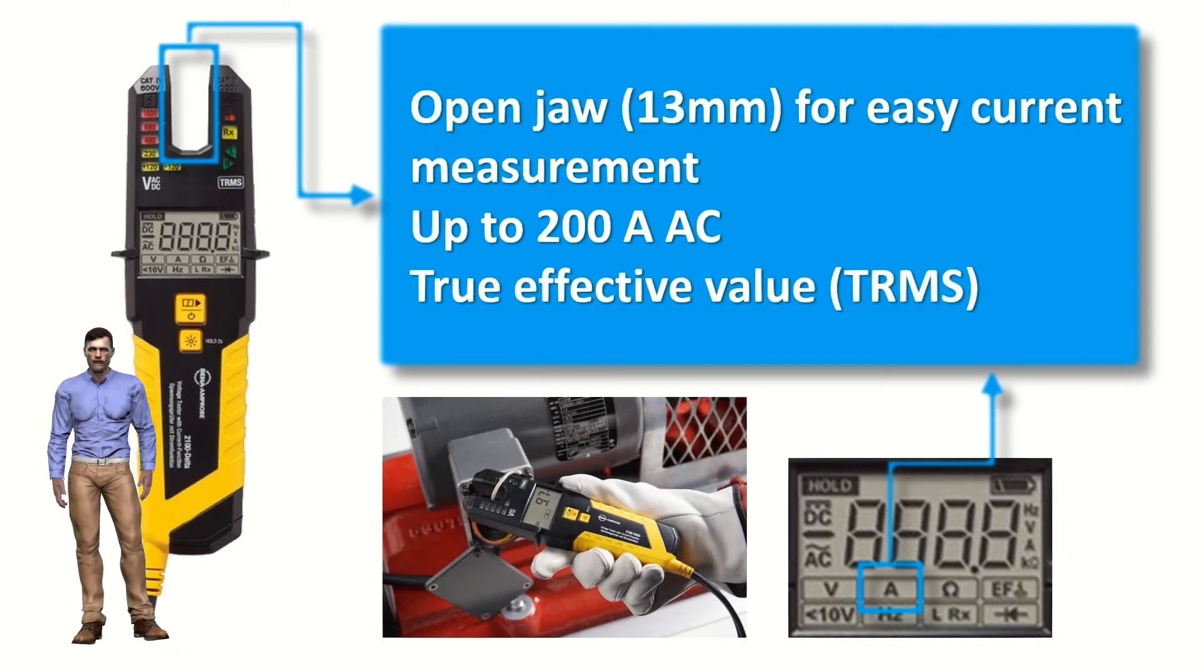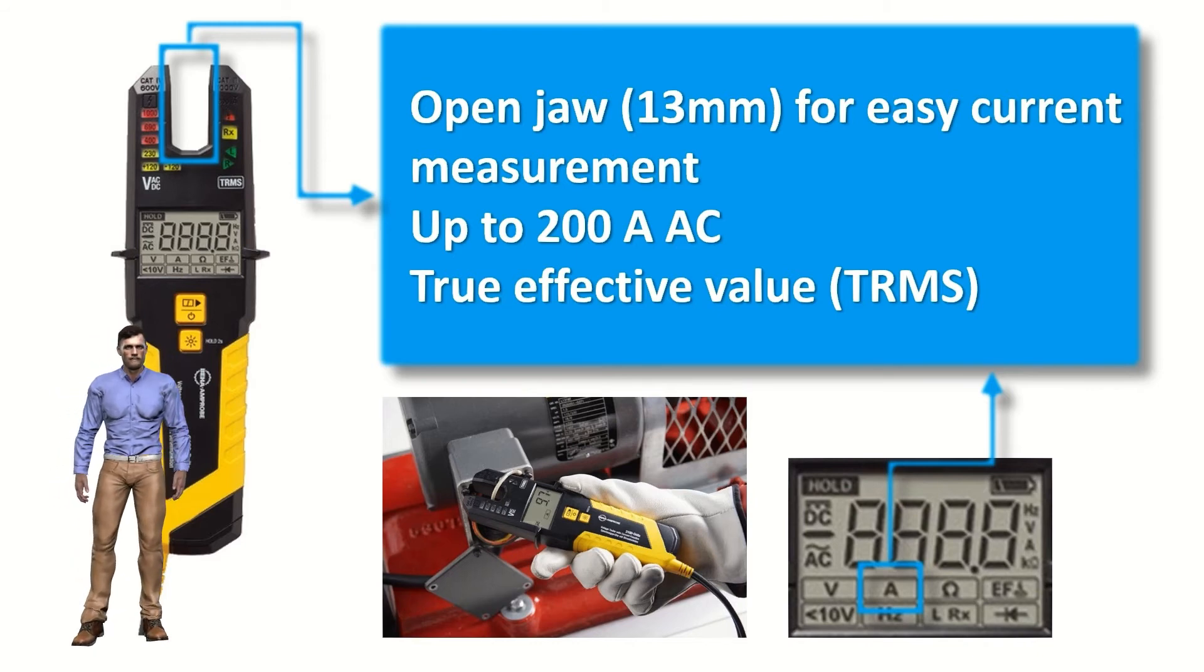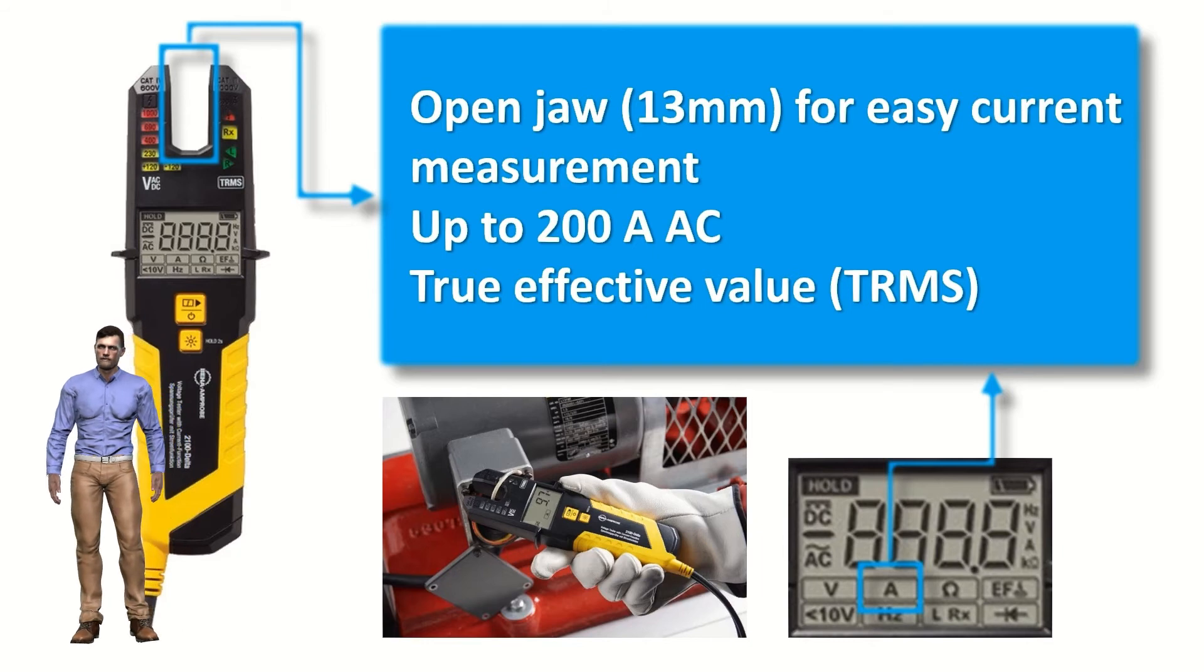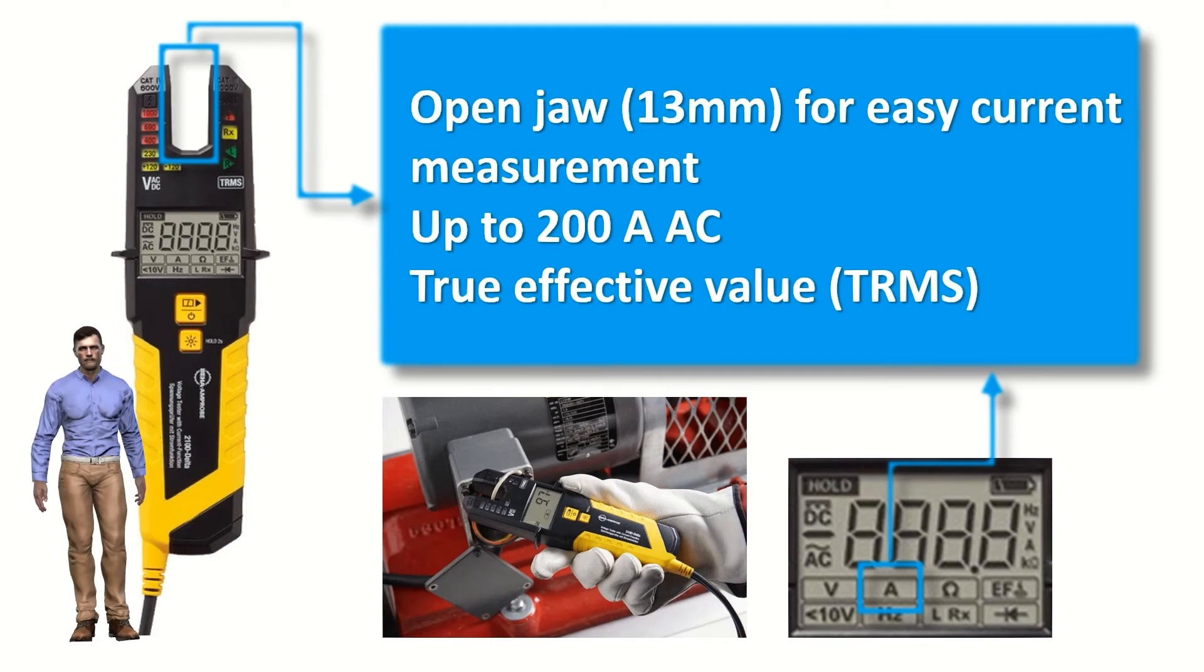The clamp has an open jaw that allows to measure AC currents of up to 200 amps in cables up to 13 mm in section. Given its open clamp format, its use is very convenient especially in cabinets with cables arranged in parallel or in cables where inserting a traditional clamp can be difficult. And as I have mentioned, the clamp measures the true effective value, that is, it takes into account the presence of harmonics in the network.